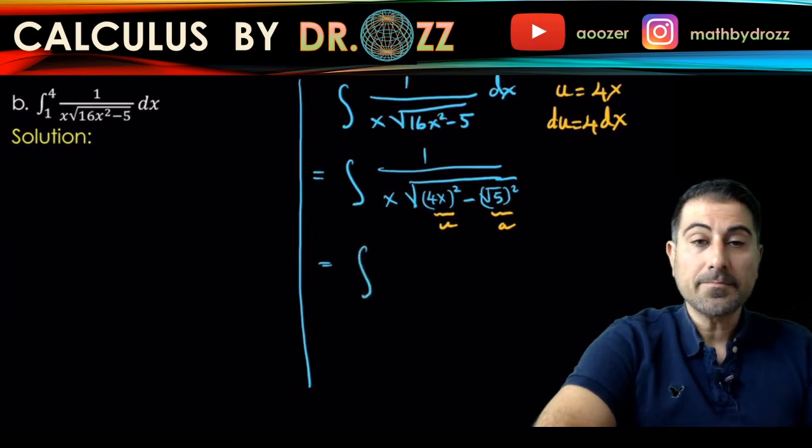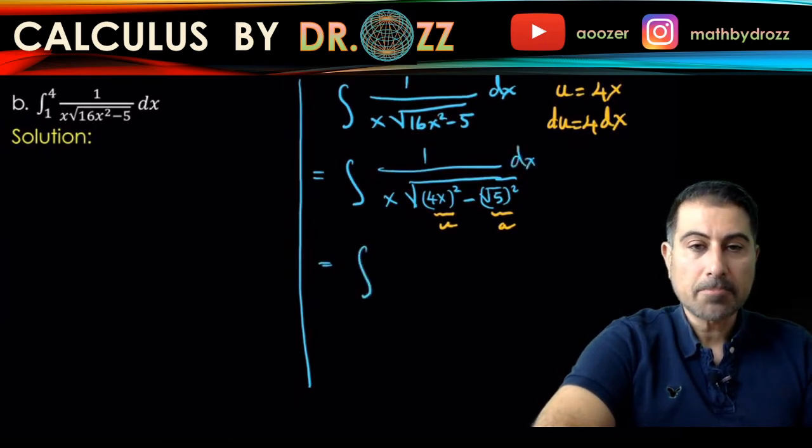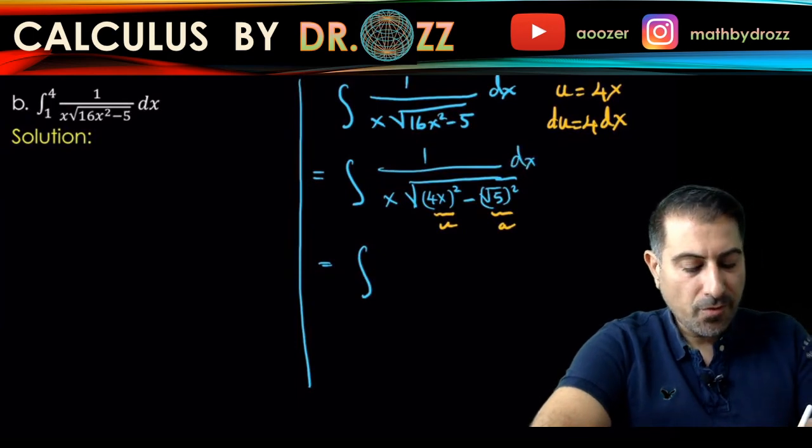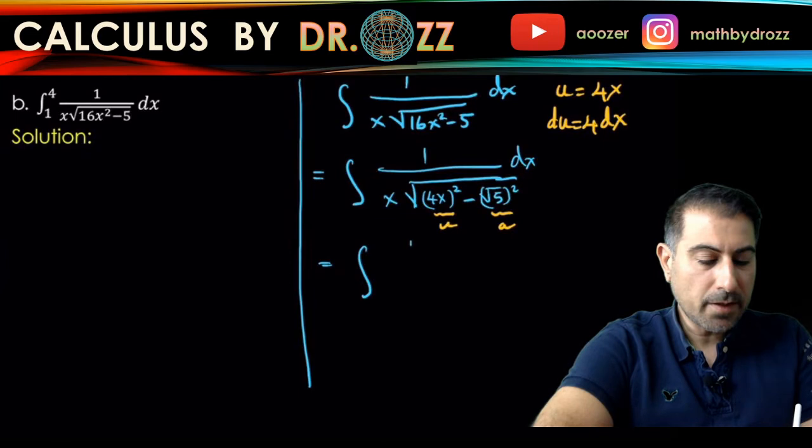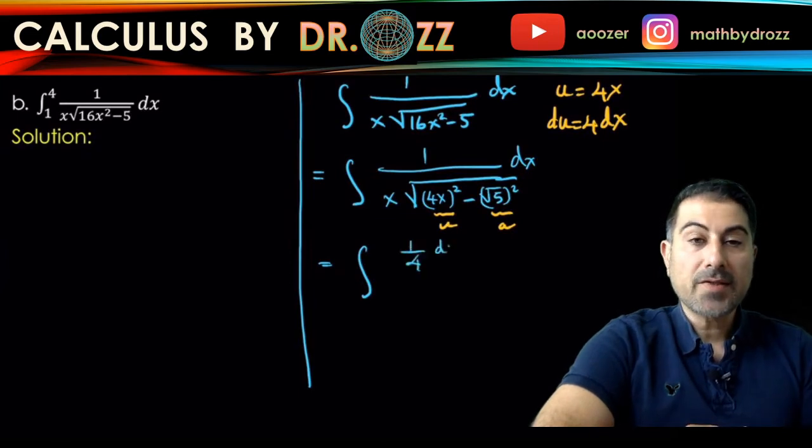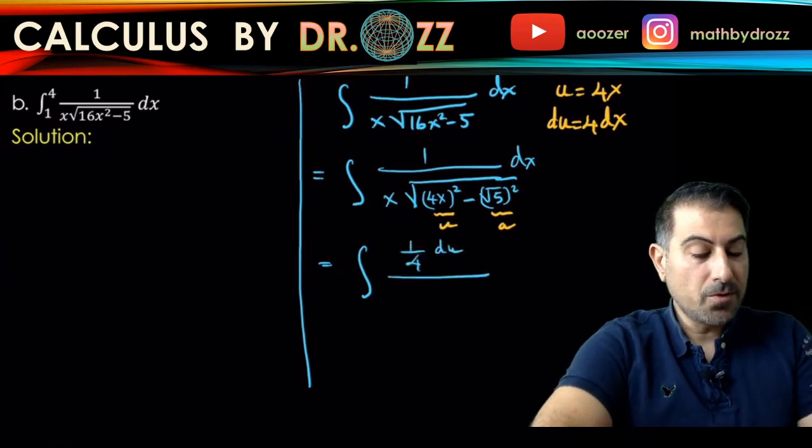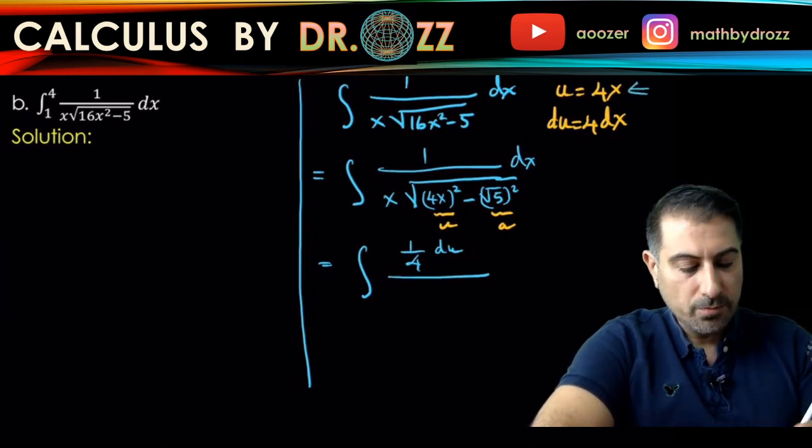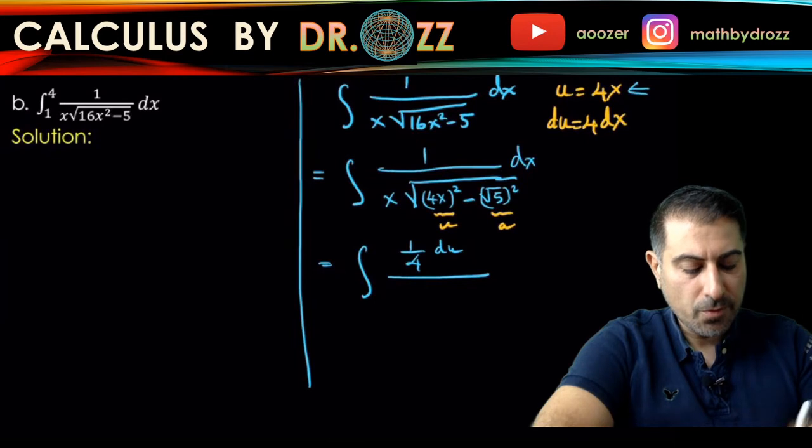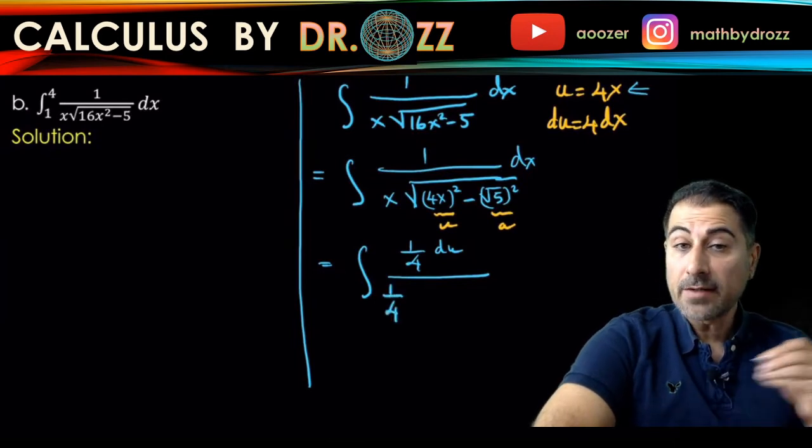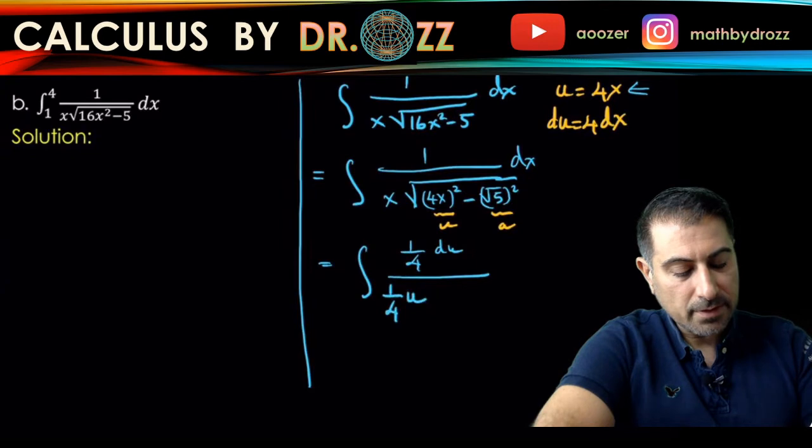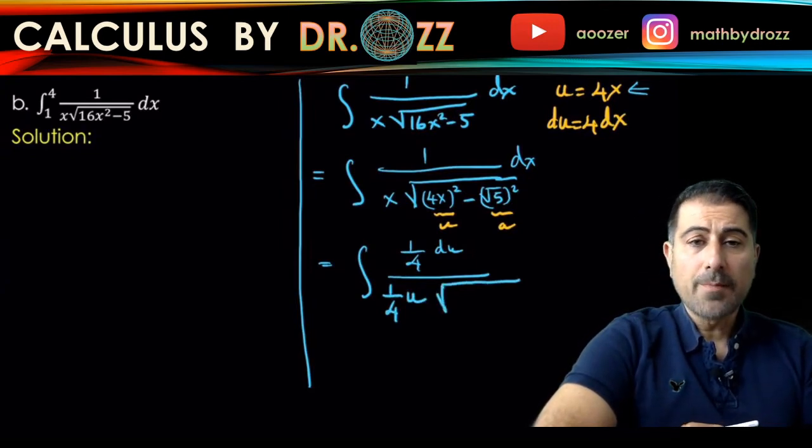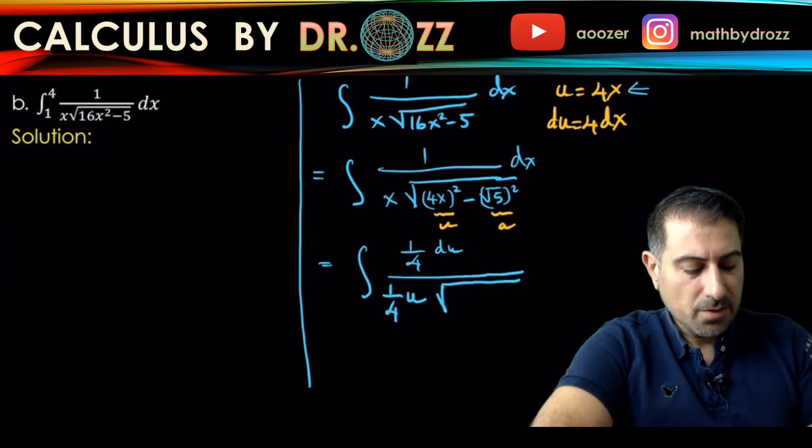Okay, and don't forget dx here. So dx is 1/4 du, and x equals from the u substitution x equals 1/4 u. Again, you're replacing everything by the u version of that. That's the core of the u substitution. And the bottom becomes u² minus a².